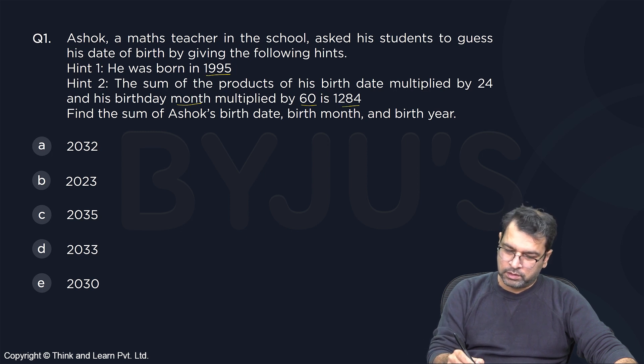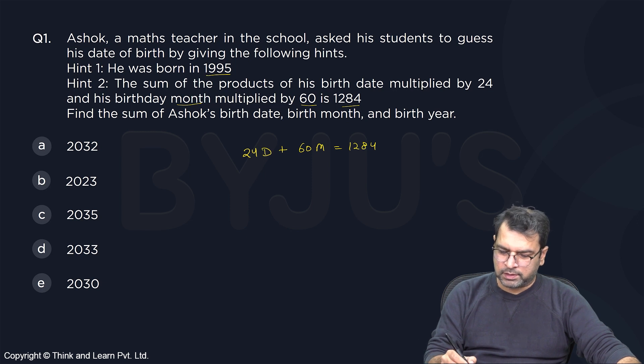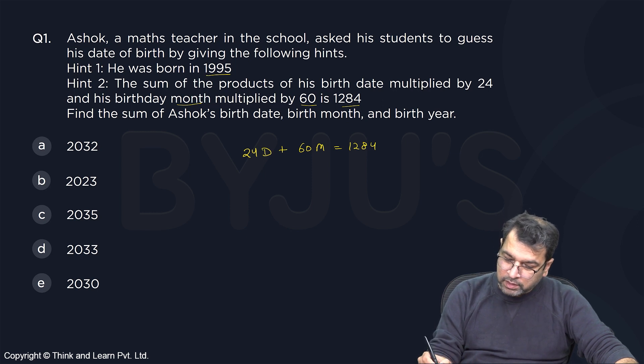So basically, 24 into number of days plus 60 multiplied by number of months should be equal to 1284. You need to consider that number of days cannot be more than 31, correct? Obviously depends on months also and number of months cannot go beyond 12. So let's cancel out first.